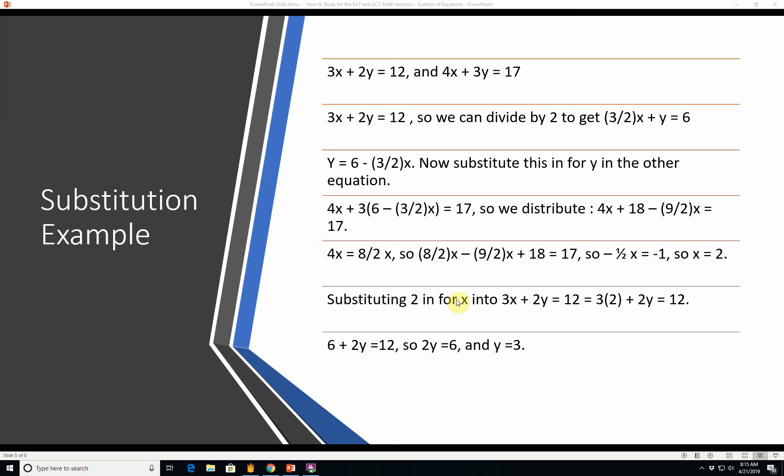Substituting 2 in for x into 3x plus 2y equals 12 you get 3 times 2 equals 6 plus 2y equals 12 so 2y equals 6 and y equals 3. You can also check it by plugging it into the other equation. 4 times 2 is 8 plus 3y equals 17. 3y equals 9 so y still equals 3. Yay! We know we did it right.